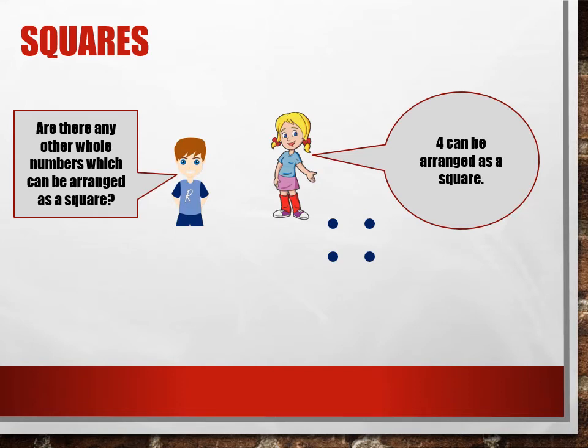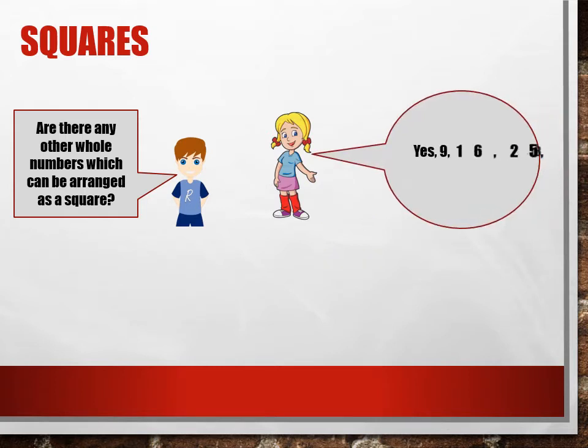Are there any other whole numbers which can be arranged as a square? Yes, nine, sixteen, twenty-five, thirty-six, etc.